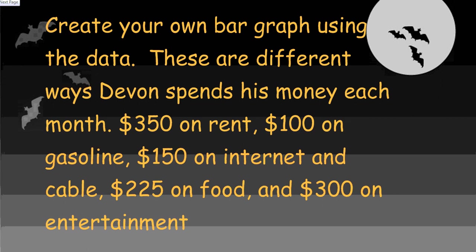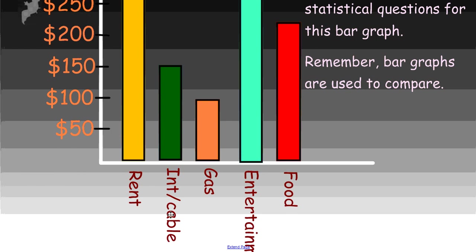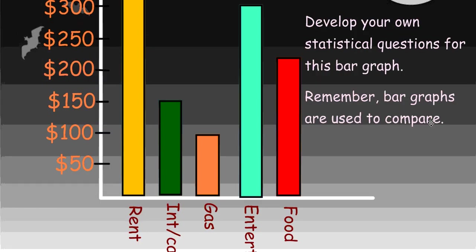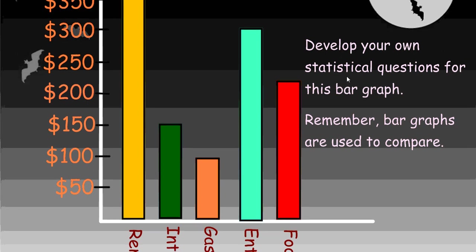Okay, let's check and see how you did. When you did this problem, we need to look at the interval first. I chose a $50 interval. It wasn't too much, but it did go a little bit higher than my other bar graph. Also, at the bottom, you should have listed the different things that he was spending his money on. Again, a bar graph is used to compare. On your own, I want you to take another little bit of time to develop some of your own statistical questions for this bar graph and discuss what some of the answers are with your class. Pause the screen and then we'll move on.